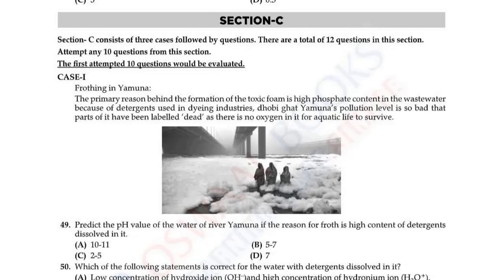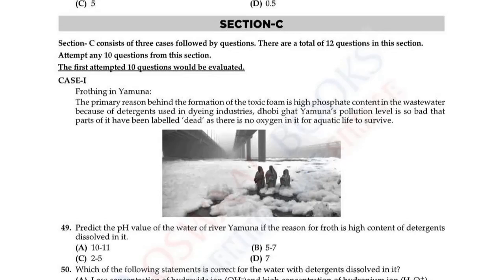Hello everyone, we are starting with Section C. This is from the self-assessment paper. Section A and Section B have already been covered, so I am starting with Section C now. In this, we have Case Study 1 about frothing in Yamuna. The primary reason behind the formation of toxic foam is high phosphate content in the wastewater because of detergents used in the dying industry. Yamuna's pollution level is so bad that parts of it have been labeled dead as there is no oxygen for aquatic life to survive.